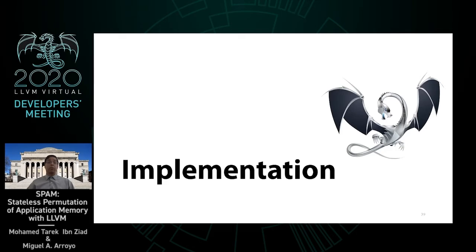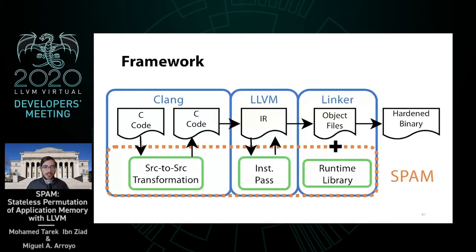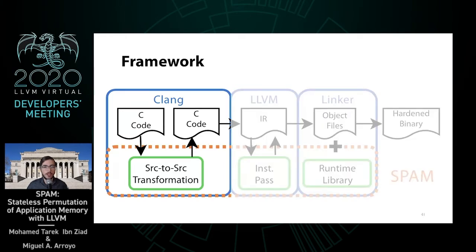Now that we understand the conceptual model behind SPAM, it's time to dive into the implementation details. Our compiler implementation is split into three parts: a source-to-source transformation pass in Clang, an instrumentation pass in IR, and a runtime library part of compiler-RT. We'll start by looking at the source-to-source transformation pass, or buff-to-pointer.